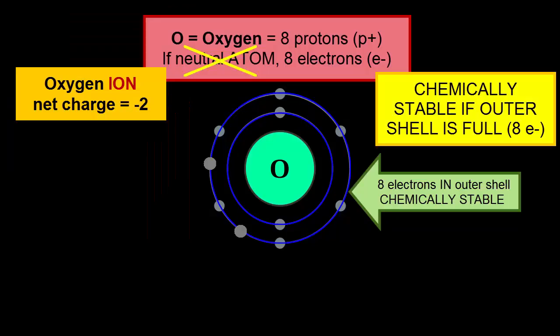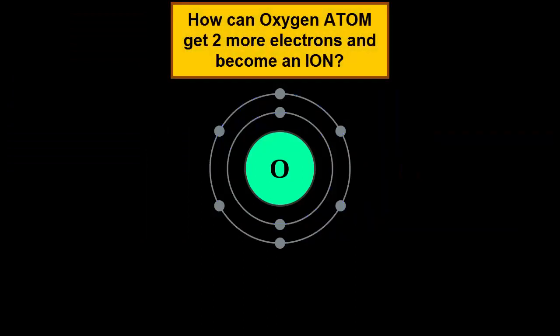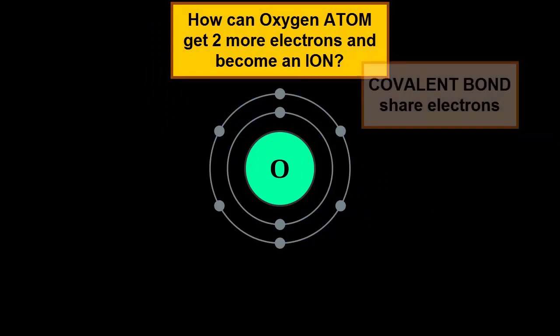Minus two. Would it be stable? Yes. So how can it arrange to get two more electrons? Two basic ways, or bonds.